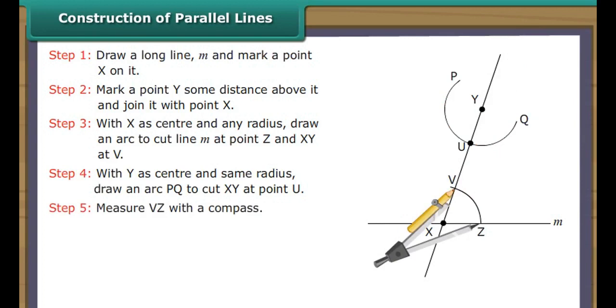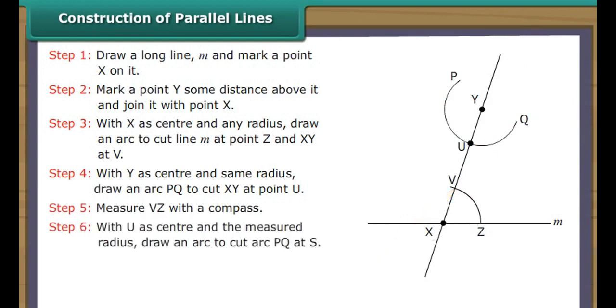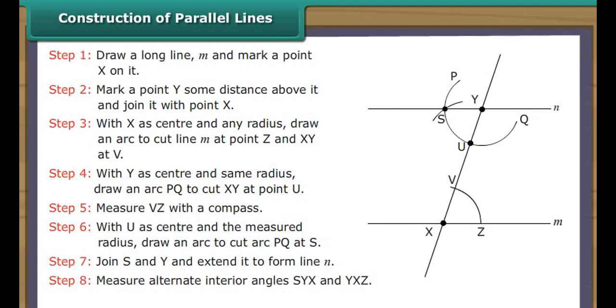Measure VZ with a compass. With U as center and the measured radius, draw an arc to cut arc PQ at S. Join S and Y and extend it to form line N.